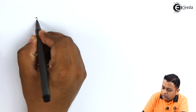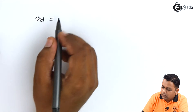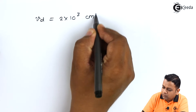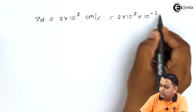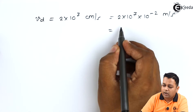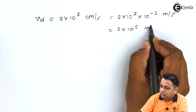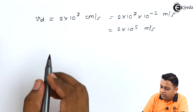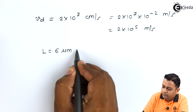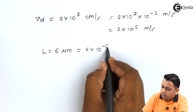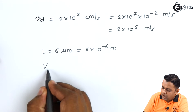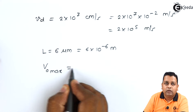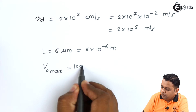First, we note down the given details. Drift velocity v_d = 2 × 10^7 cm/s, which converts to 2 × 10^5 m/s. Drift length L = 6 micrometers = 6 × 10^−6 meters. Maximum operating voltage V0_max = 100 volts.